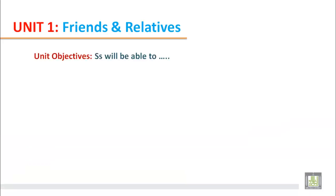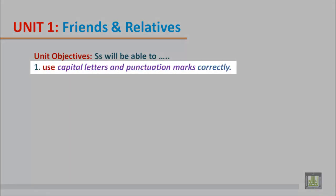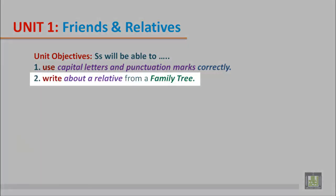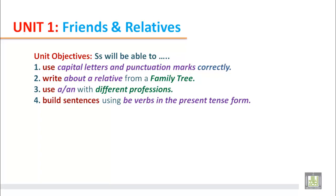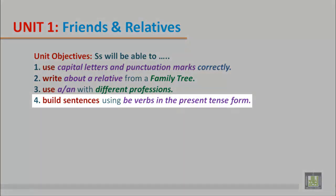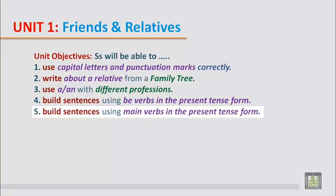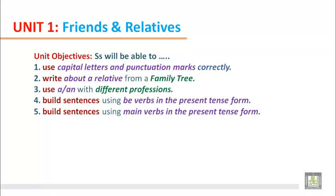Unit 1 objectives: students will be able to use capital letters and punctuation marks correctly, write about a relative from a family tree, use 'a' or 'an' with different professions, build sentences using 'be' verbs in the present tense form, and build sentences using main verbs in the present tense form.